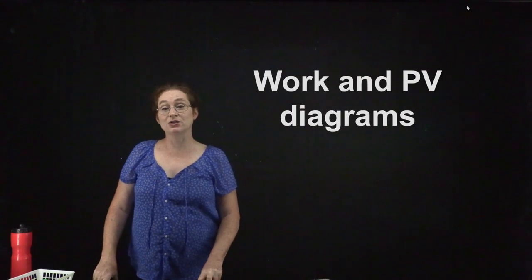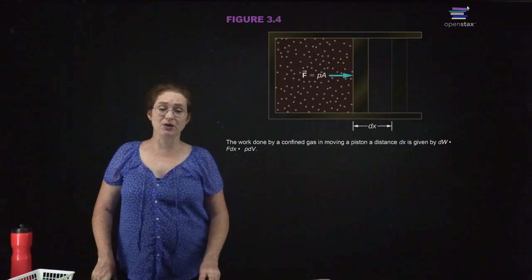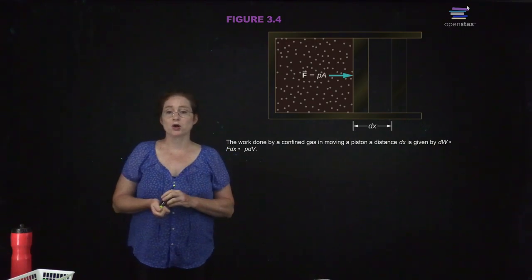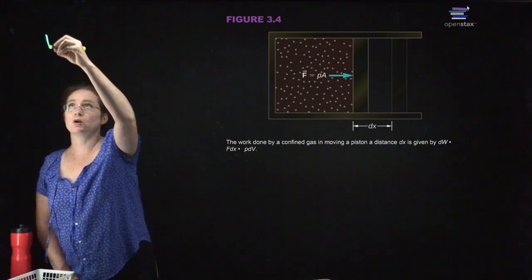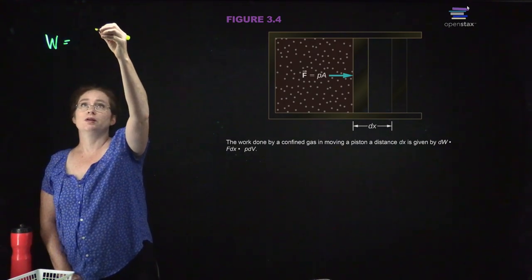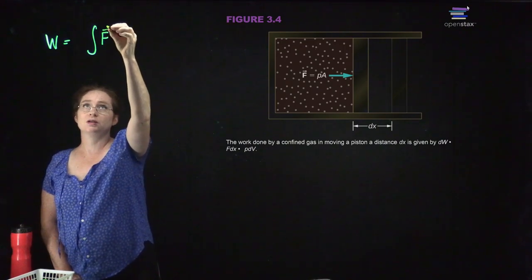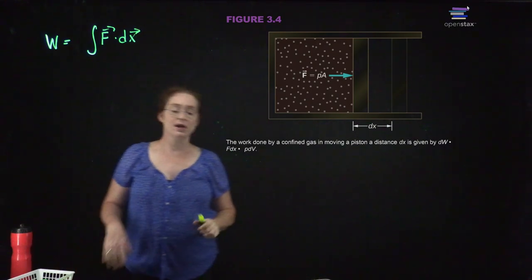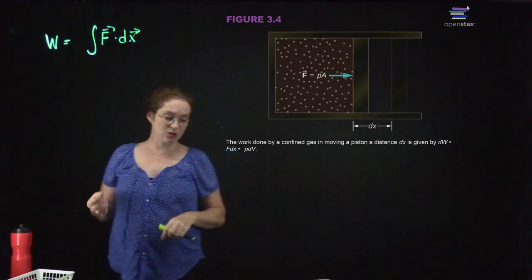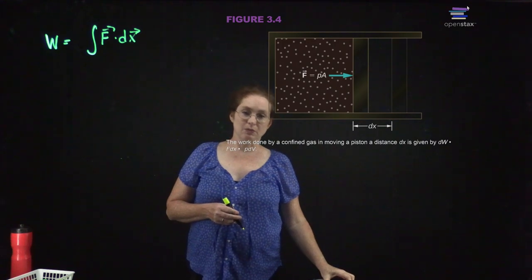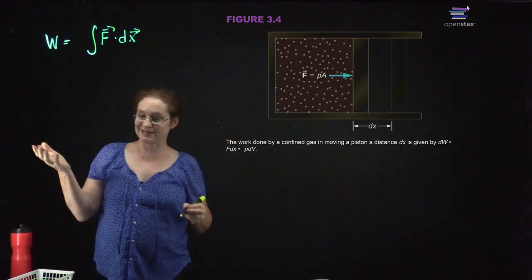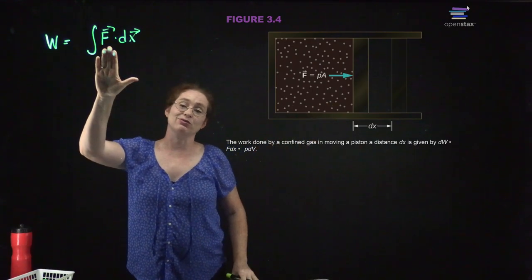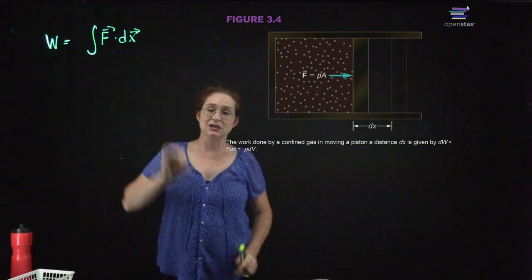We're going to do this by work and PV diagrams — by calculating the work and the PV diagrams. When we introduced the concept of work, we said that the work is going to equal the integral of the force dotted with the displacement. Many of you are taking calculus concurrently, but I'm going to assume you've moved near the end of the first semester, so if I draw this integral, you have some idea what I mean.